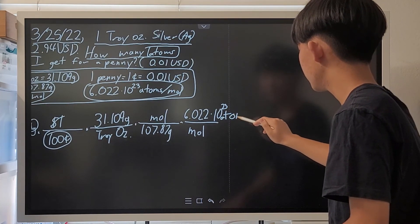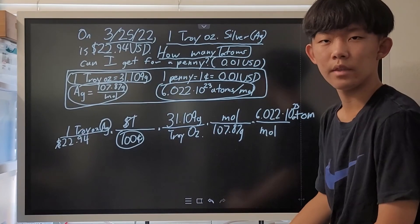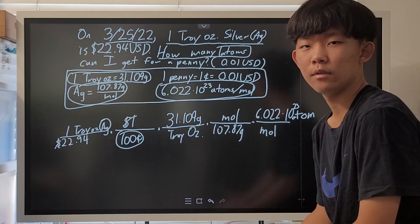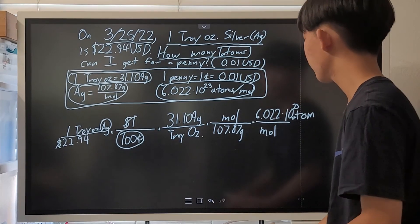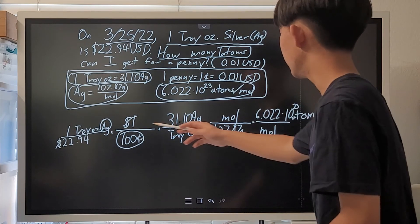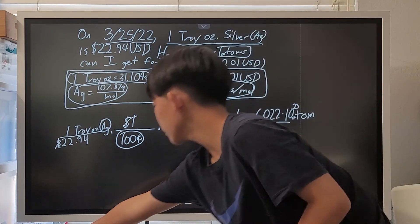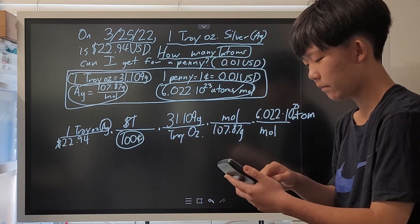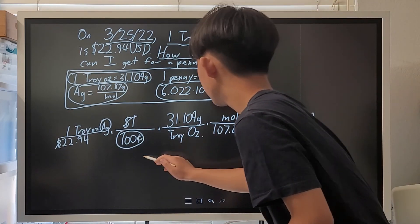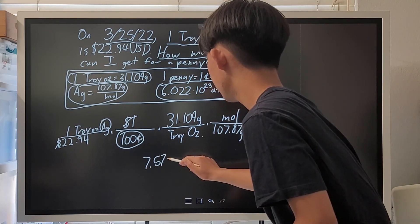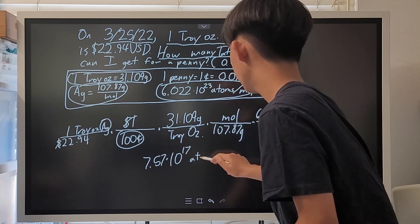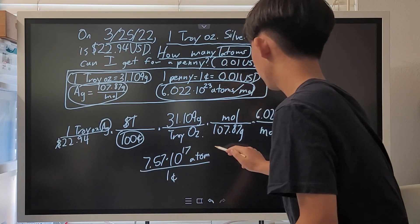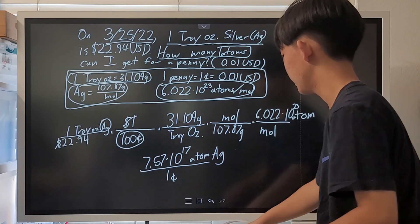And then we put 6.022 times 10 to the 23rd power atoms. Always label your units so that you don't have to get confused. If you don't label units, you're likely going to get confused and not know what to divide or what to multiply. So, now all we have to do is do the math. So, here we just have to punch it into our calculator. And then we get 7.57 times 10 to the 17th power atoms per 1 cent. Or atoms of silver, to be specific.